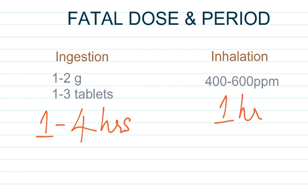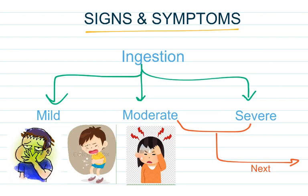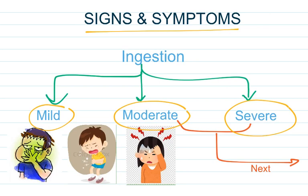Signs and symptoms depend on the dose and severity of poisoning. Based on that, it can be divided into 3 main categories: Mild Intoxication, Moderate Intoxication and Severe Intoxication. In Mild Intoxication, we see nausea, vomiting, abdominal pain and headache.